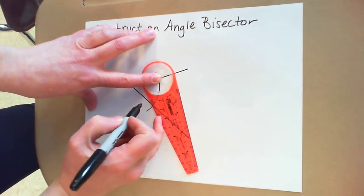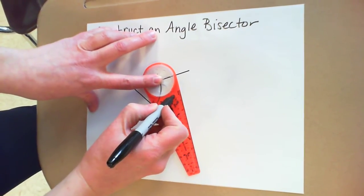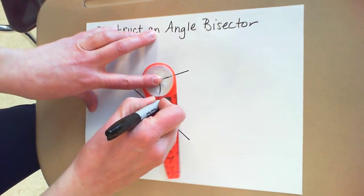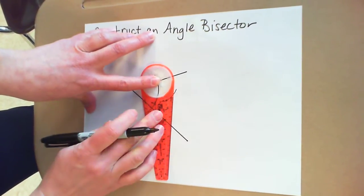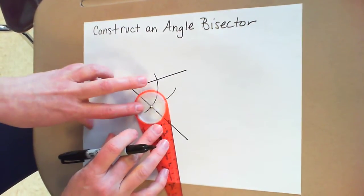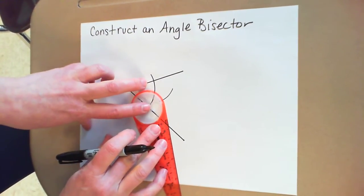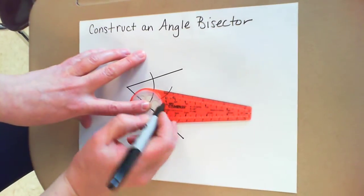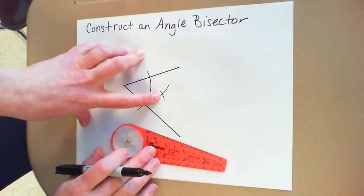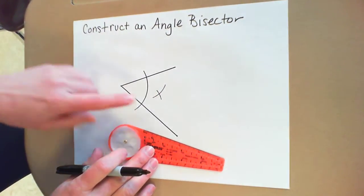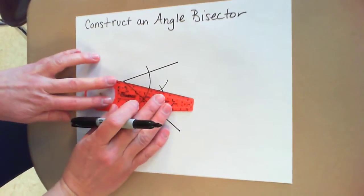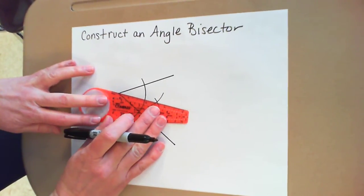So I'm going to pick this one. And then using that same dot, you put your gold ring on the other intersection. I have to use that same dot. And where they cross, you're going to connect that intersection back to the vertex to make your angle bisector.